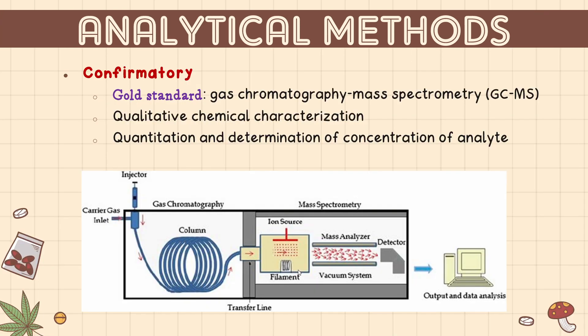For confirmatory testing, the gold standard is GCMS — gas chromatography mass spectrometry — which allows both qualitative and quantitative determination: qualitative chemical characterization and, if the drug is present, quantitation of the analyte concentration. The turnaround time for a confirmatory test is around 15 days. The principle of GCMS is discussed in the method of detection video lecture.